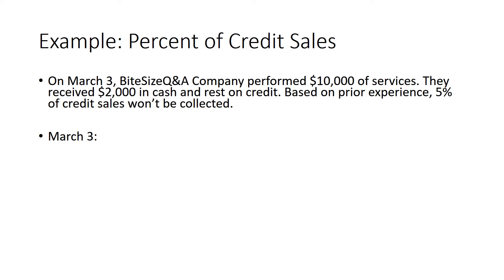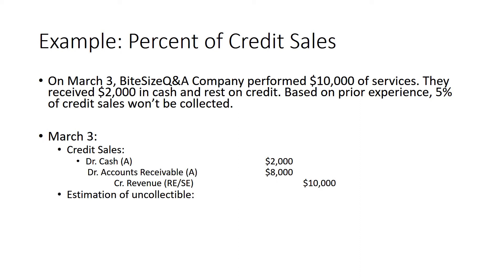On March 3rd, they have the credit sale. They received $2,000 in cash but recorded $10,000 in service revenue. So the difference — $8,000 — is what they expect to receive in the future, and that's accounts receivable. Next, they estimate how much they expect not to collect. Based on prior experience, 5% of credit sales won't be collected. Is it 5% of $10,000 total revenue, or 5% of accounts receivable? It's actually 5% of accounts receivable — 5% of $8,000 — or $400. Why? Because we already received $2,000 in cash, so that amount is guaranteed. What's uncertain is the collection of the $8,000.